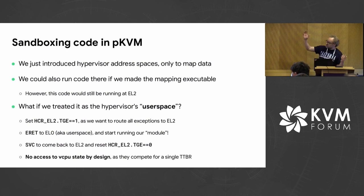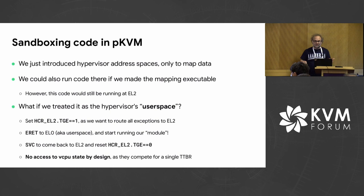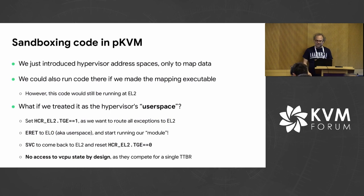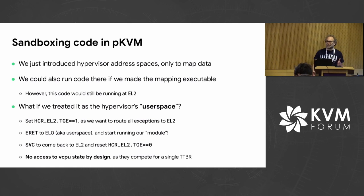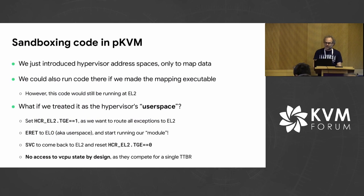We just need to make mappings executable there. We just need to treat it as user space — setting TGE to one because in that case we want to trap exceptions from there. We ERET to EL0, our user space, and start executing our module. Easy peasy. A system call to go back to EL2, reset TGE. By design, this module doesn't have access to any vCPU state because they compete for the same TTBR0 — so that's again a good isolation primitive.